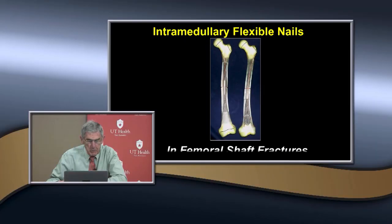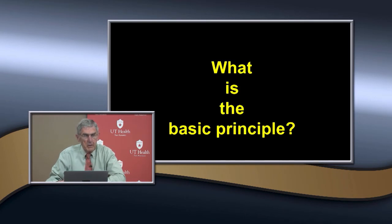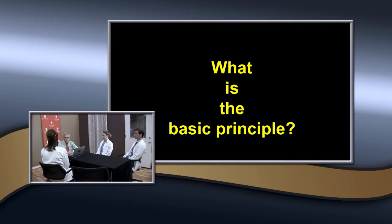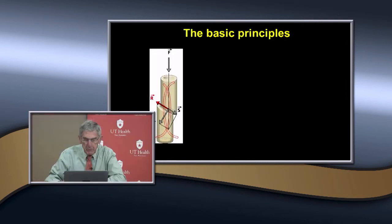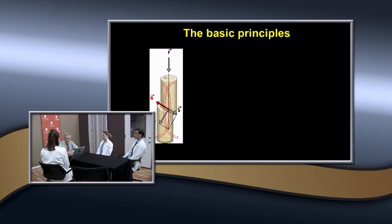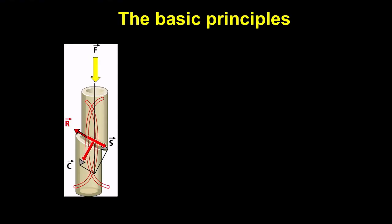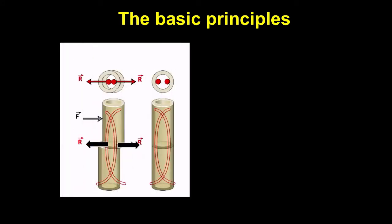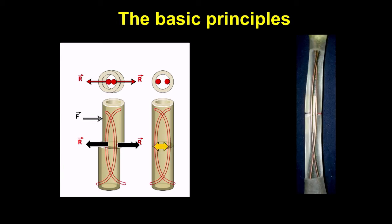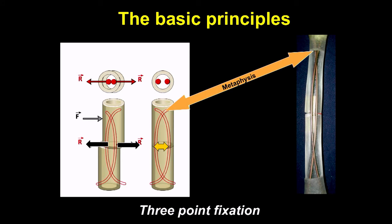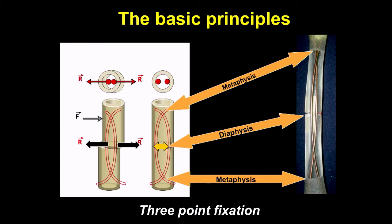Now we'll discuss intramedullary flexible nails for femoral shaft fractures. The basic principle is that the nails must have spread at the fracture site. Being flexible, when weight bearing is applied, the nails expand to provide three-point fixation — proximally in the metaphysis, at the diaphysis where they spread, and distally. Appropriate fracture types include mid-shaft femur fractures with less than two centimeters of shortening, short oblique, long oblique with some cortical integrity, spiral fractures, multifocal or bifragmentary patterns with some internal stability, and pathological unicameral bone cysts.